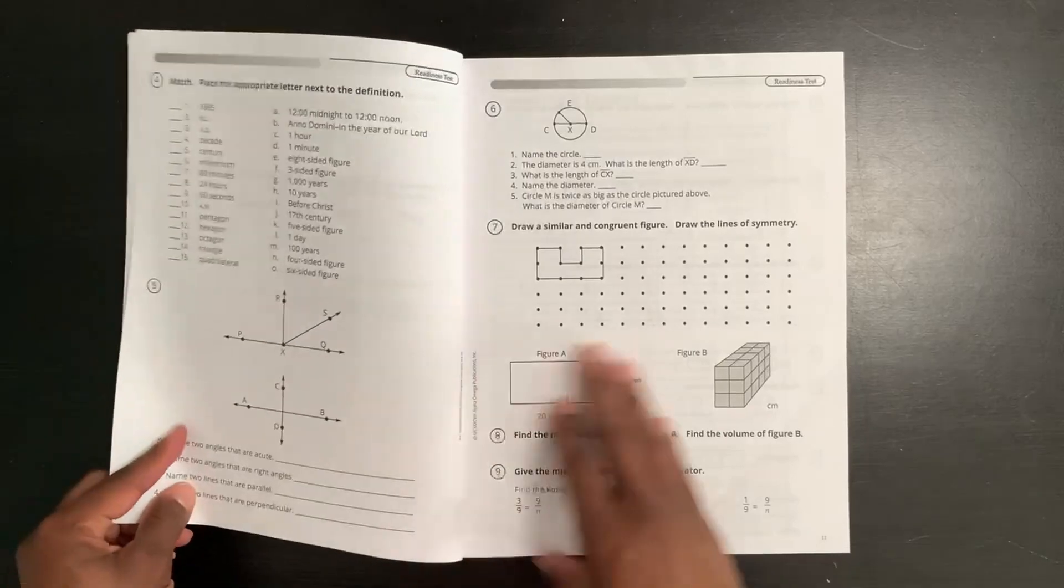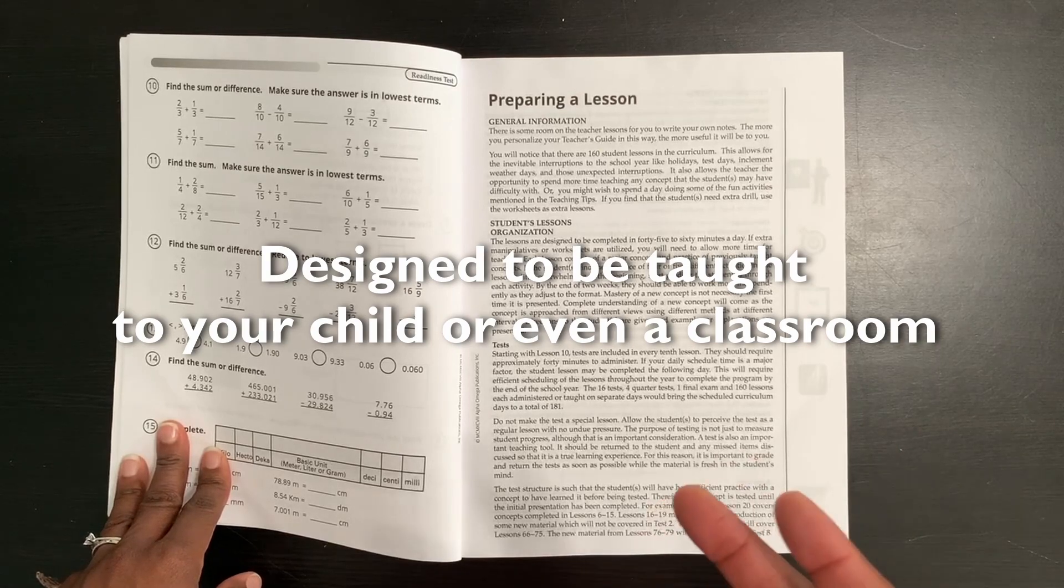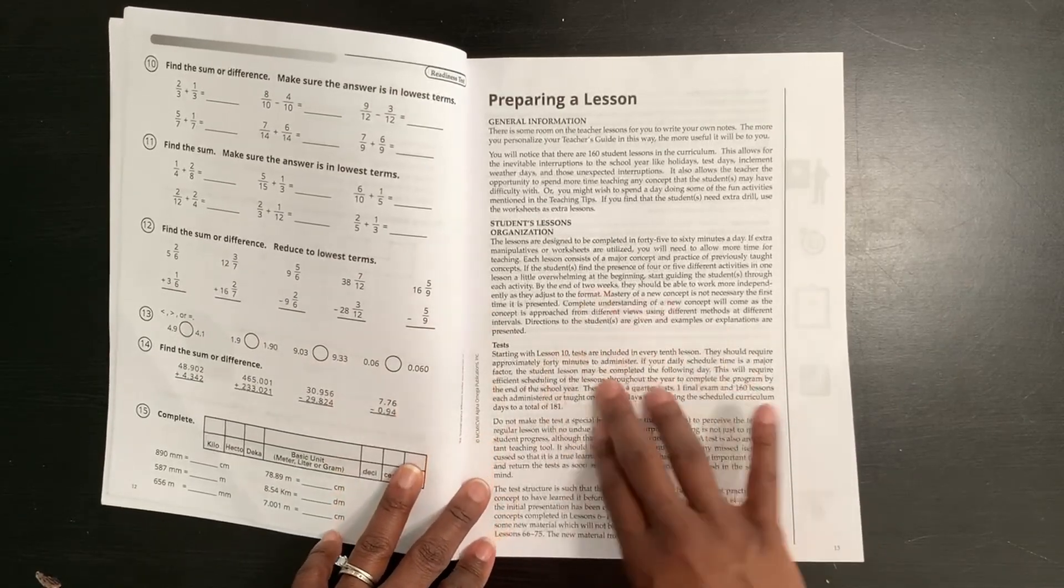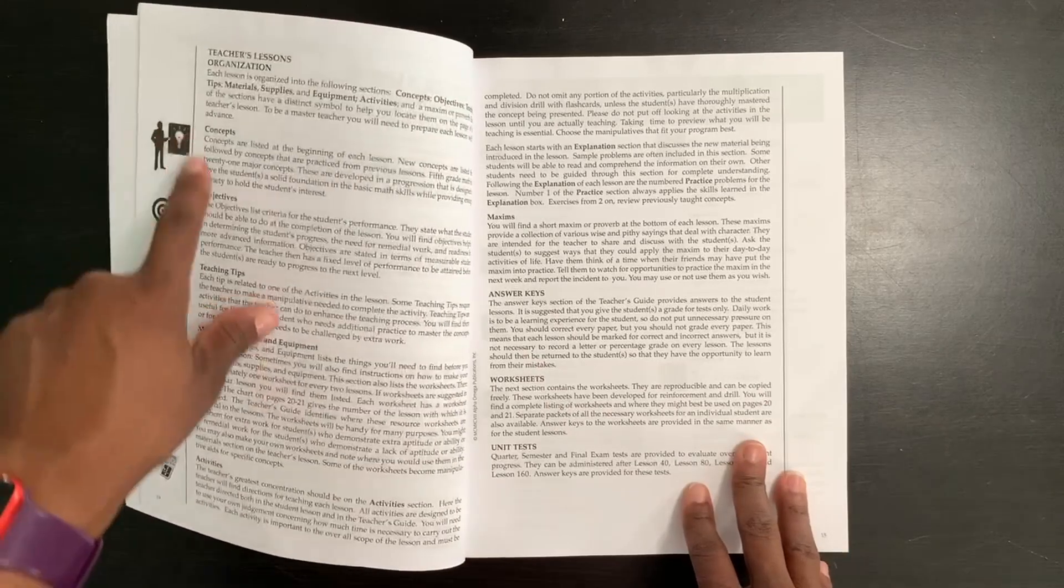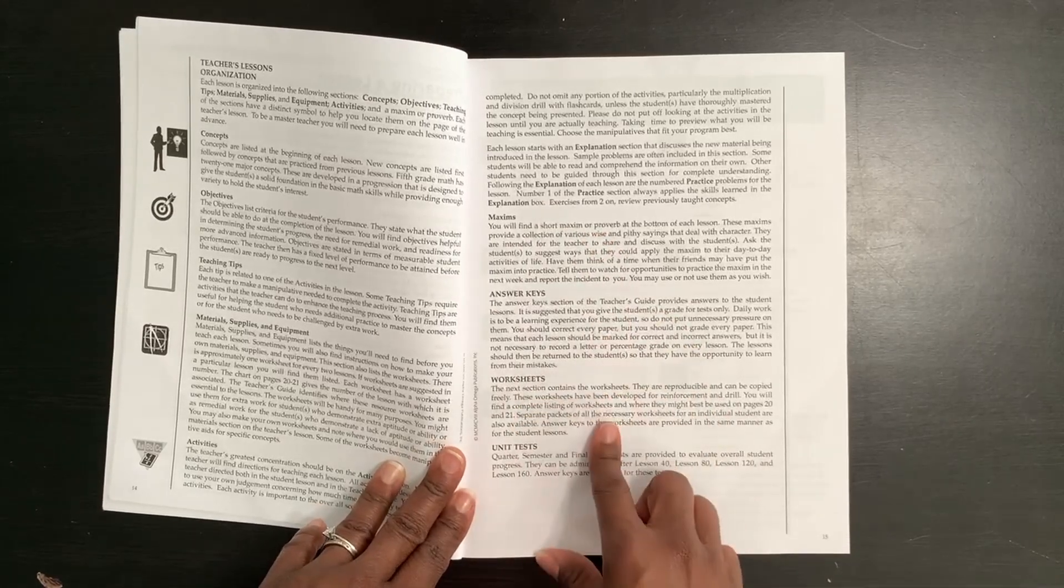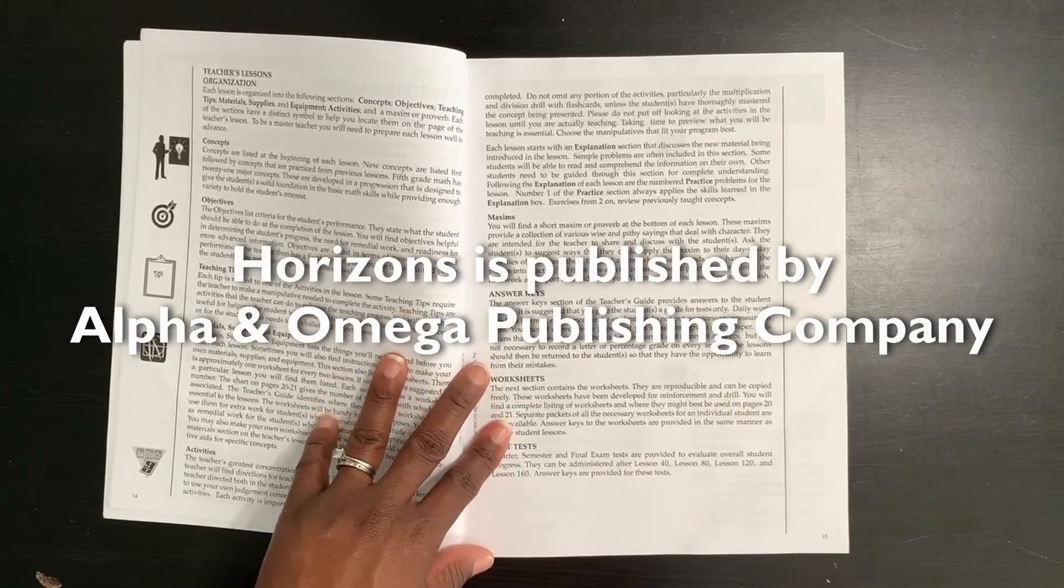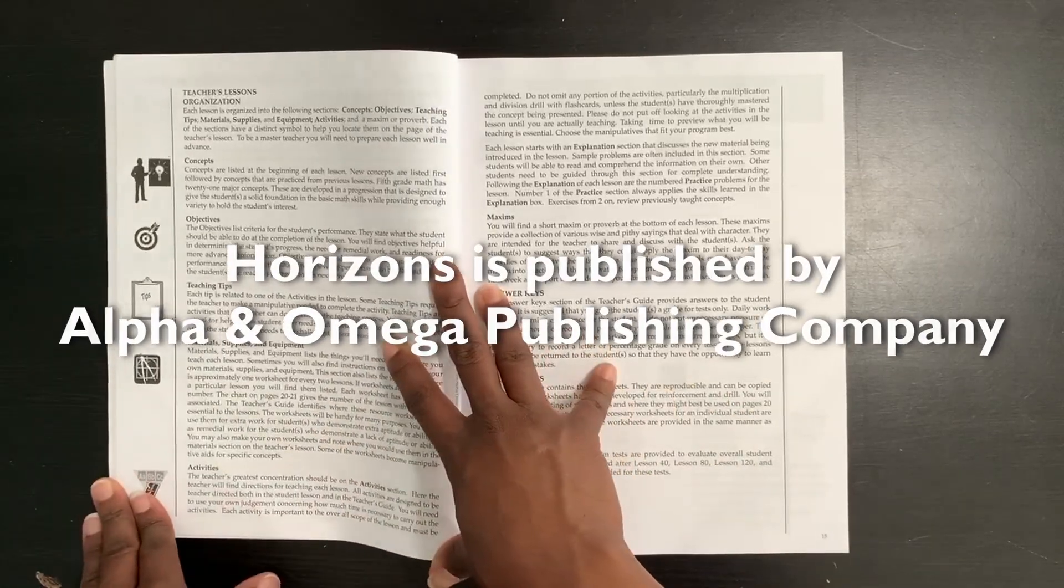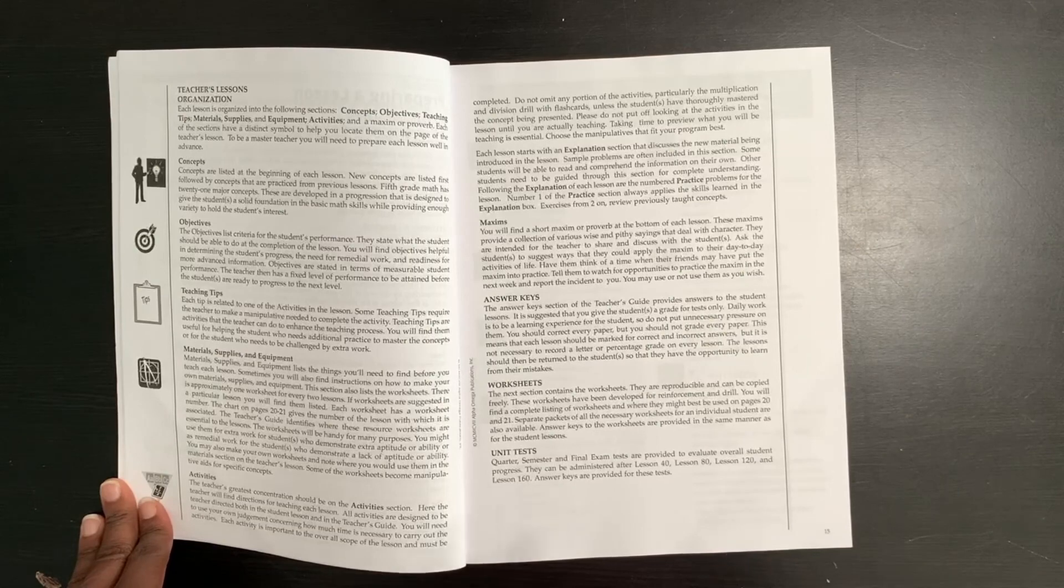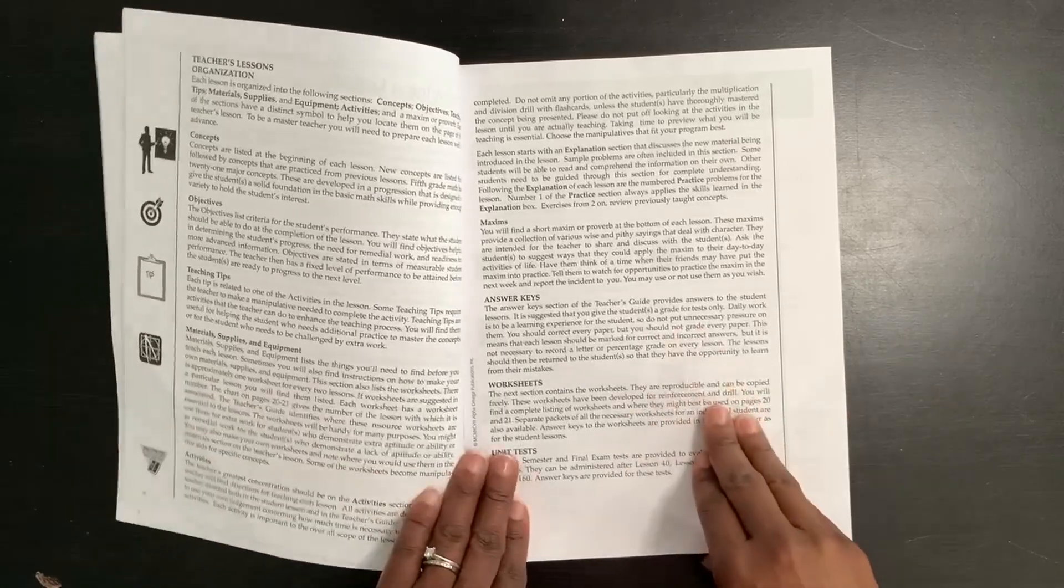Now Horizons is a more teacher heavy curriculum depending on your child's level. But it gives you instructions on what to do and I'll show you. Preparing for the lesson, organization and tests, all the tips in here and then teacher lesson and how you organize all of those things for you. There are also maxims and I'll show you what that is. It is a proverb of some sort at the end of each lesson. So there are scriptures referenced within this curriculum. So if that is something that you do not want, then this will probably not be the curriculum for you. There's also Bible and Christian based references within some of the lessons. Not every lesson, but it's definitely there and I'll try to show you guys as we flip through.